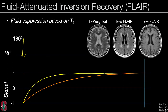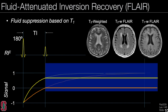Another approach with inversion recovery is called FLAIR, or fluid attenuated inversion recovery, which is fluid suppression based on T1. In the brain, we might want to suppress cerebrospinal fluid (CSF). We play an inversion pulse and use a longer inversion time to null the fluid signal shown by the orange trace, while shorter T1 signals shown by yellow are not nulled. Example images show that the bright CSF in the middle of a T2-weighted image is suppressed in FLAIR. Notably, FLAIR can be combined with both a T2-weighted sequence and a T1-weighted sequence to get different contrasts with fluid suppression.